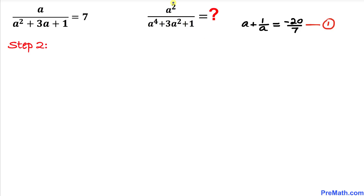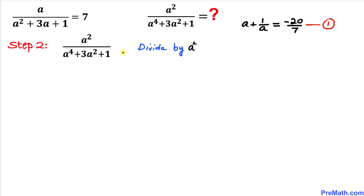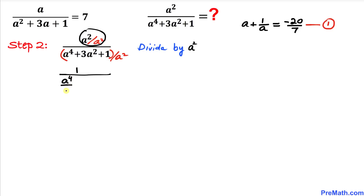Now let's focus on the target rational expression: a squared divided by a to the power 4 plus 3a squared plus 1. Let's divide both the top and the bottom by a squared. The numerator a squared divided by a squared becomes simply 1. In the denominator, we can separate it as a to the power 4 divided by a squared, plus 3a squared divided by a squared, plus 1 divided by a squared.